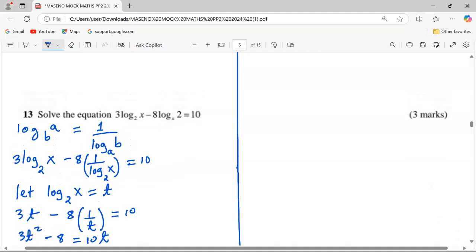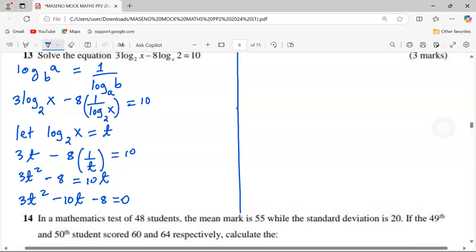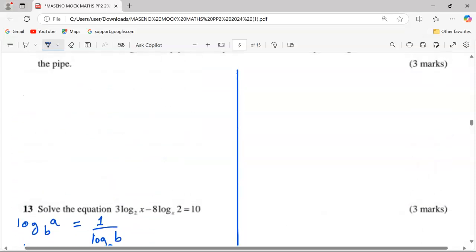I'll use the factorization method whereby I need a product of a times c, which is 3 times -8 giving us -24, and a sum of the value at b which is -10. So these two factors when multiplied give us -24 and when added -10 are -12 and +2.